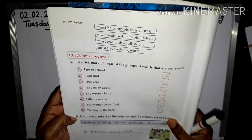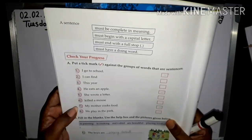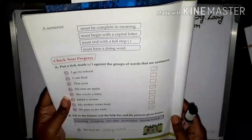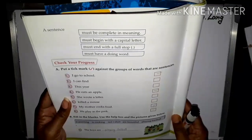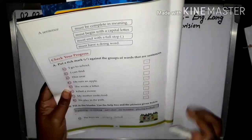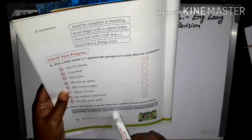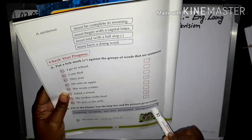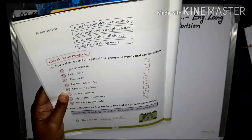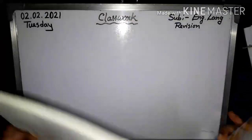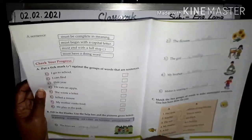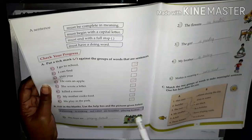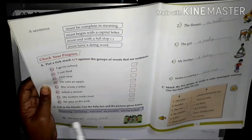Fill in the blanks. Use the help box and the pictures given below: in painting, in cooking, red t-shirt, beautiful, playing football. First, see the picture — right side picture, children. See, the boys are playing football. So write here: playing football.